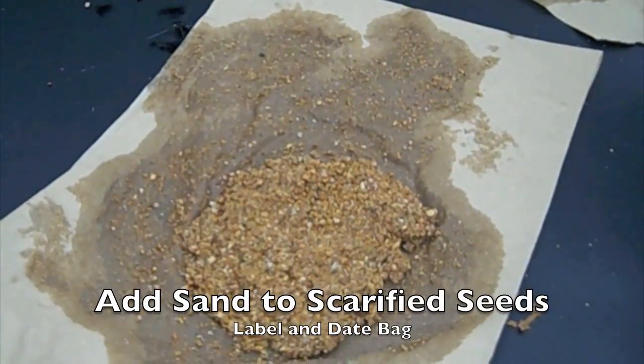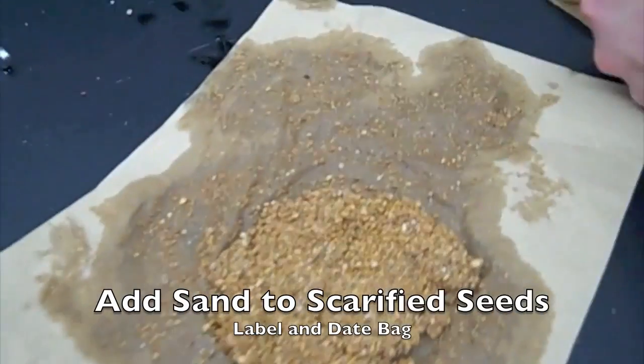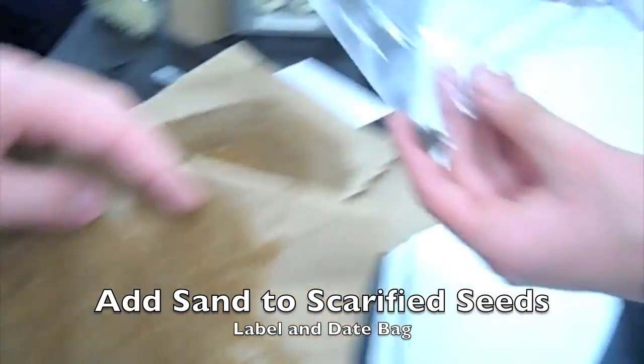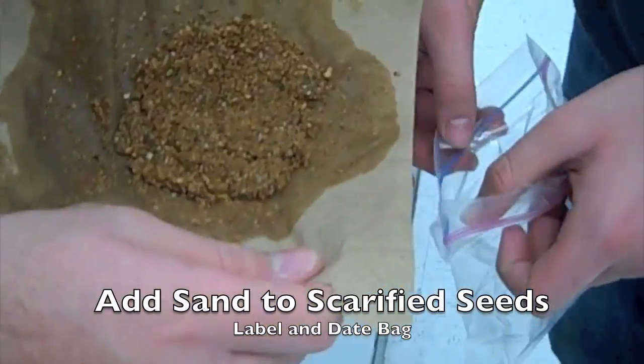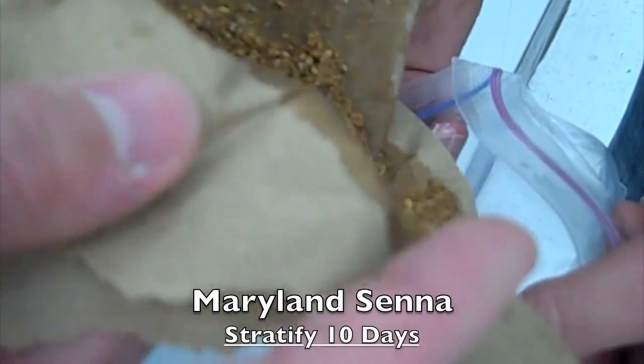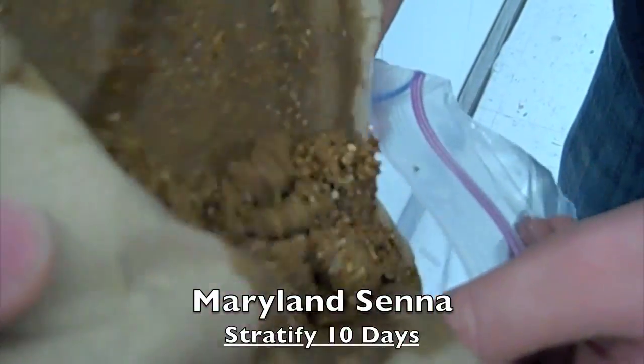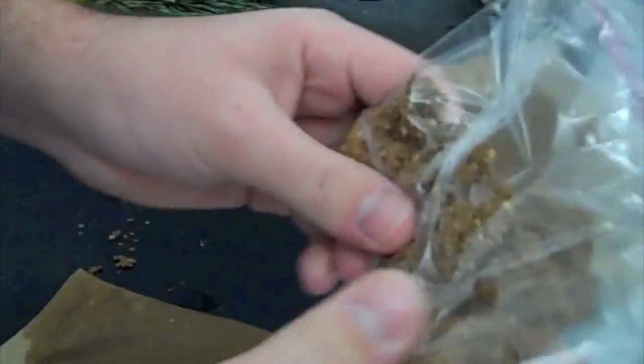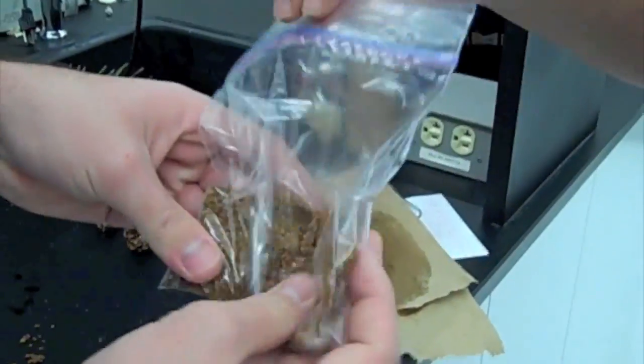Okay, so now we're going to take our wet sand, which we've dried out, and we're going to add it over into our Maryland Senna seeds. So our Maryland Senna is going to want to go inside of the refrigerator for roughly 10 days. So we're going to want to add the wet sand, make sure we get plenty of it, and we're going to want to mix it around, and make sure that the seeds spread out throughout the sand.